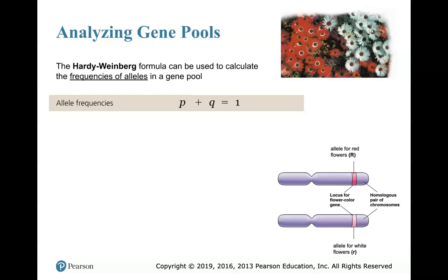We're going to use the Hardy-Weinberg formula to calculate the frequency of the alleles — uppercase R and lowercase r, the two different types of alleles in this gene pool. To calculate allele frequencies, we use the equation P plus Q equals 1. P stands for the dominant allele, and Q is the recessive allele. So in the place of P, I'm going to put the value for uppercase R, the red allele, and in the place of Q goes lowercase r for white flowers.